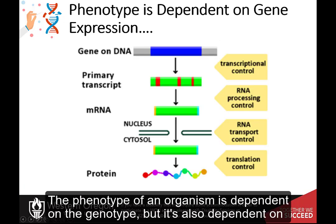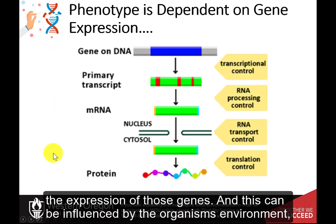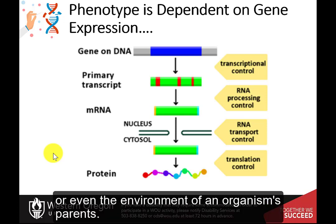The phenotype of an organism is dependent on the genotype, but it's also dependent on the expression of those genes, and this can be influenced by the organism's environment, or even the environment of an organism's parents.